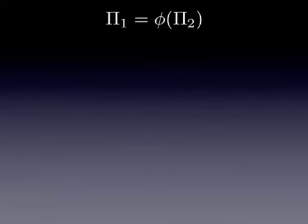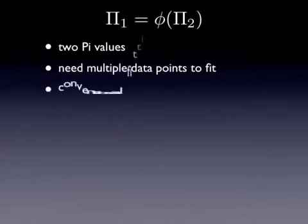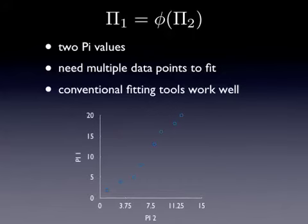If you have two pi's, it gets a little more complicated, because now you need multiple data points to fit - we do have some relationship here. And we're just going to use conventional fitting tools, because they work pretty well. So the idea here is you collect a set of data where pi 1 varies in terms of pi 2, you plot it, and you fit a line through it.